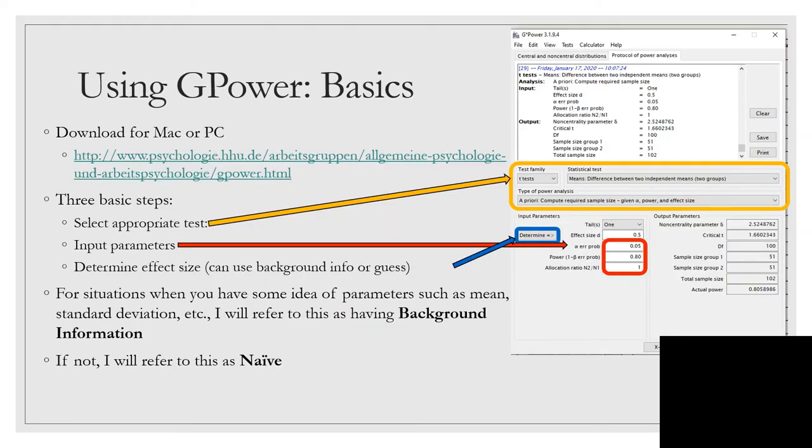Let's take a look at the basics of using G-Power. You can download it for either Mac or PC following this web link. There's also available a manual and a tutorial for your use. Once you have it up, you can run a test using three basic steps. The first is to select the appropriate test - the test family, then the specific statistical test, and then the type of power analysis. We'll be doing exclusively a priori, but you can do other types of power analysis on your own.